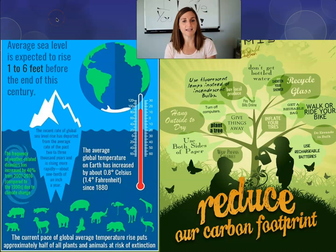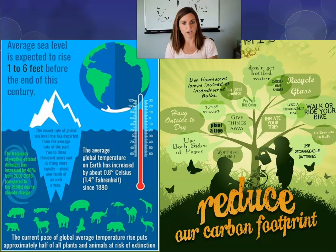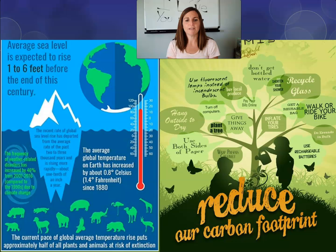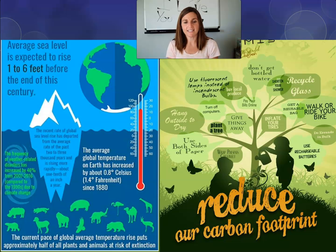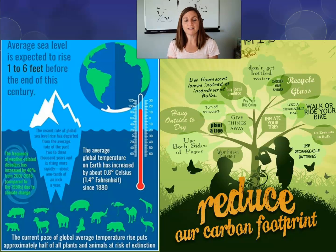Here's some statistics: the earth's sea level is expected to rise one to six feet before the end of this century. The rate of global sea rise is happening much faster than it was in the last 2,000 years. The average global temperature is definitely increasing. The frequency of weather-related disasters has increased by 46 percent in the last 20 years. And if we continue at this rate, nearly half of all plants and animals are at risk of extinction on earth.